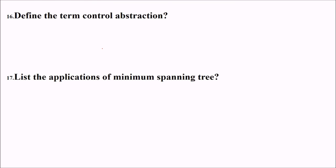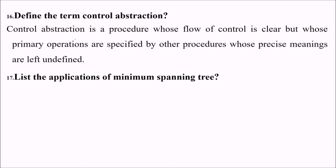Define the term control abstraction. Control abstraction is a procedure whose flow of control is clear but whose primary operations are specified by other procedures whose precise meanings are left undefined. This is control abstraction.